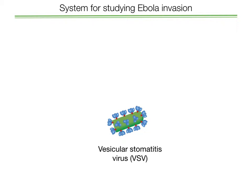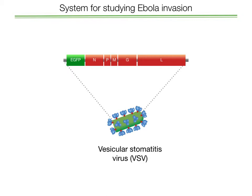VSV is also an RNA virus like Ebola — it also has a membrane, and it also has a glycoprotein. What that allows us to do is replace the glycoprotein of VSV, called G, in the genetic material of VSV, and replace it with that of Ebola, i.e. GP. This allows us to generate VSVs expressing Ebola glycoprotein. And so although this virus is still VSV, the invasion process is really determined by the Ebola glycoprotein that we've put into this particle.